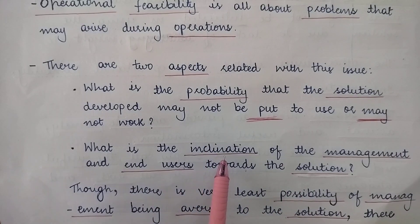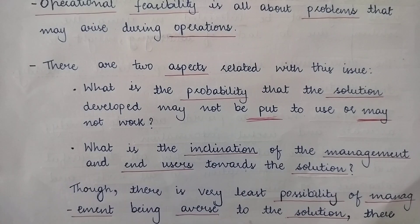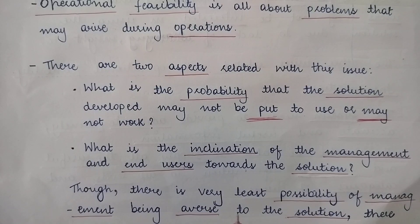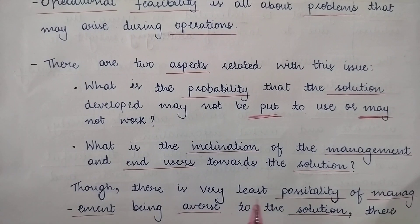When I say inclination, that means their interest to use that particular information system. When we talk of management, there is a very least possibility that the management is not interested in the solution, because it is usually with the consent and discussion among the people of top management that they come with the proposal for a new project to the system analyst. So the people who themselves proposed a new project have a very less probability of not being interested in that particular solution.